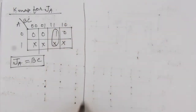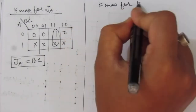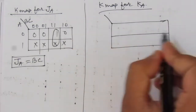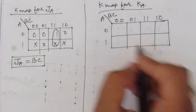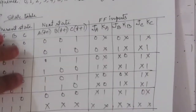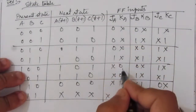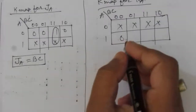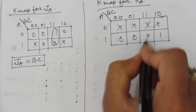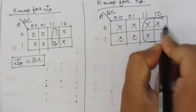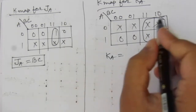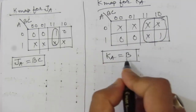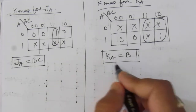Now we find the expression for KA using another three-variable K-map. The KA values are: don't care, don't care, don't care, don't care, 0, 0, 1, don't care. After combining, we get KA = B. That means we can directly connect the second flip-flop output B to the KA input.